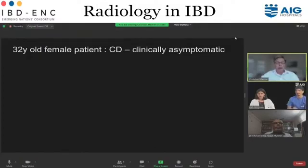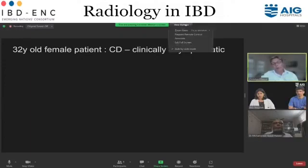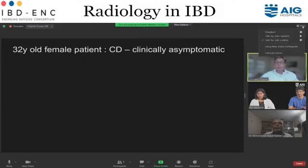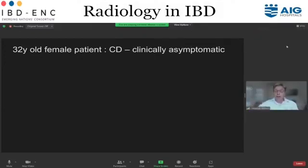Let me show you one example. That's a 32-year-old female patient. She has Crohn's disease. She's clinically asymptomatic. She came to my IBD clinic — I hadn't seen her for a year. She is on immunosuppressive therapy. She was sitting across from me saying she's doing absolutely fine: no symptoms, normal stool frequency, no abdominal pain, no fever, nothing.